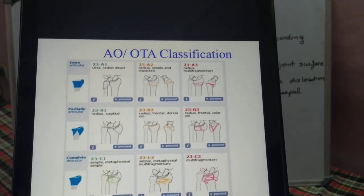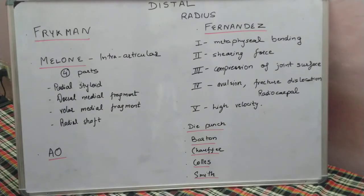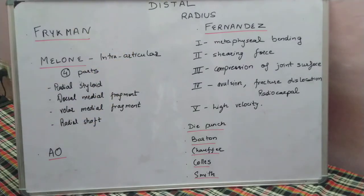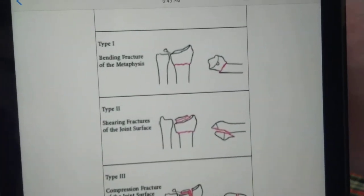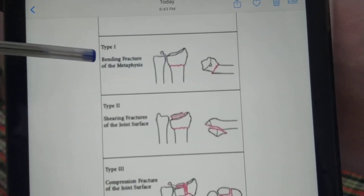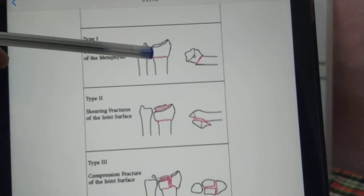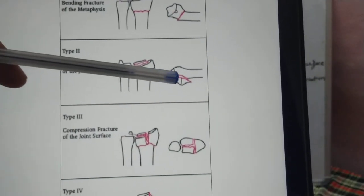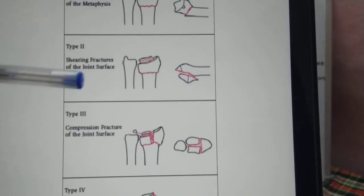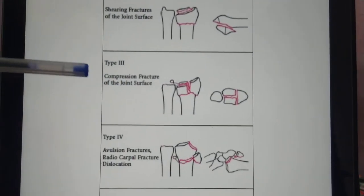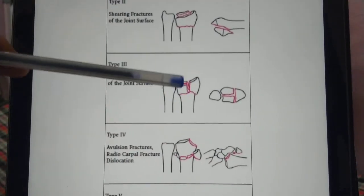The last named classification is the Fernandes classification, which is based on the mechanism of injury. Type 1 is a bending type of force at the metaphyseal level leading to an extra-articular fracture. Type 2 is a shearing type of force causing a partial articular fracture, either volar or dorsal.